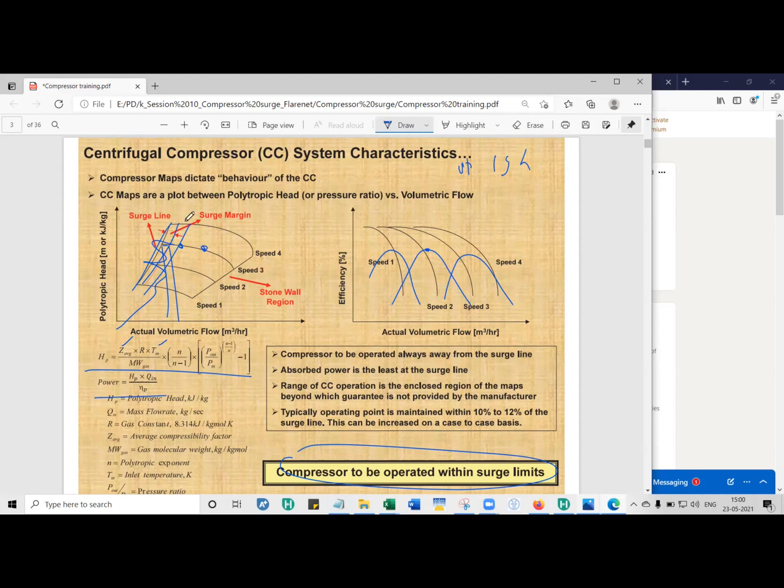When a manufacturer provides you with the performance curves, the polytropic head versus the actual volumetric flow rate, the operating point must operate as close as possible to the maximum efficiency. At lower efficiencies, again, you require more power to compress the gas. So, and on a final note, always, always operate the gas compressor within the allowable limits to prevent mechanical damage.